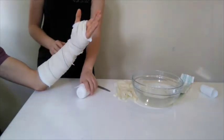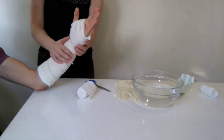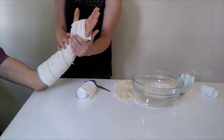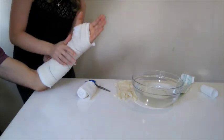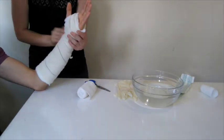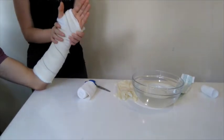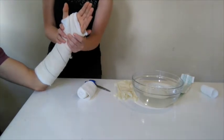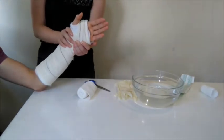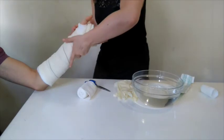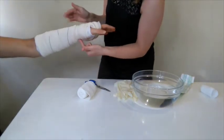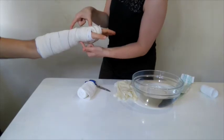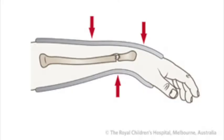It is advisable to start moulding the cast after the second layer of plaster of Paris. The layers must be smoothed and moulded to give it strength and maximise the fit around the wrist. Moulding is done using the palms of the hand, not the fingers, as this may cause indentation and could result in pressure sores. Ultimately, the cast should be oblong and not cylindrical, as this will give the greatest amount of support. After smoothing, apply three-point pressure over the fracture to mould it and stabilise the reduction, as shown in the pictures.